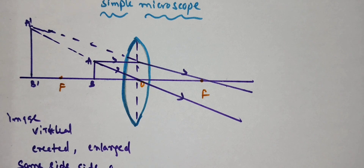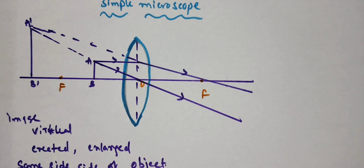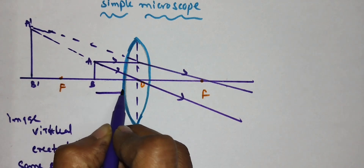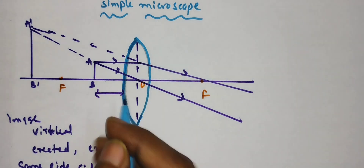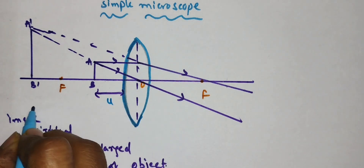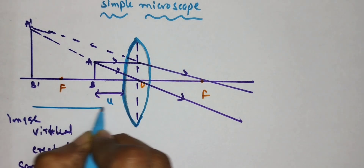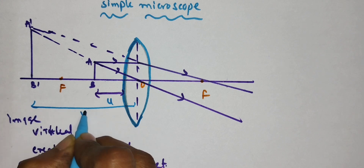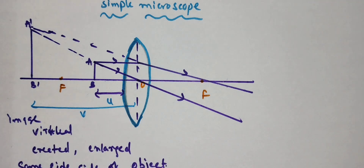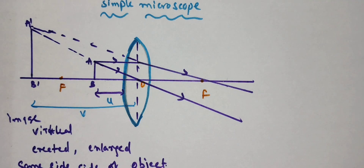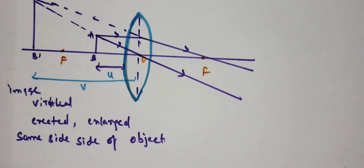We already know the magnification formula is image distance divided by object distance. We can take the distance from the optical center to the object as U, and the distance from the optical center to the image as V. So M is equal to image distance by object distance.